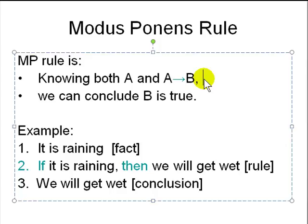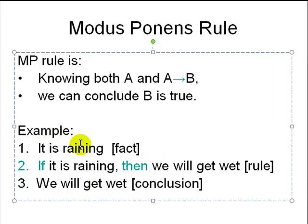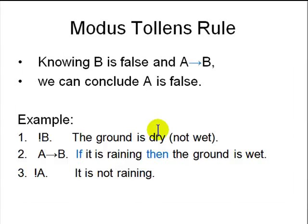It is called modus ponens. Knowing A and A implies B, we can conclude B. For example, 'it is raining' is a fact, and 'if it is raining then we will get wet' is a rule. Applying the rule to the fact, the conclusion is that we will get wet.